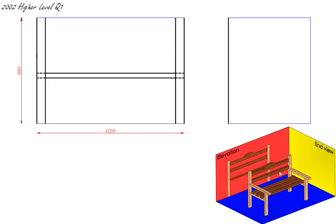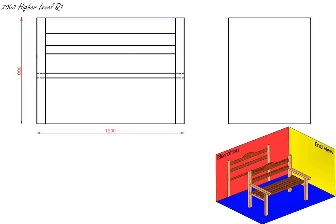The next thing we'll put in is our back rails. To get your back rail, you're going to come up another 200mm to find the back rail. From the bottom of this member to the bottom of this member is going to be 200mm. This here is 70mm, and we carry on and draw in our top rail.